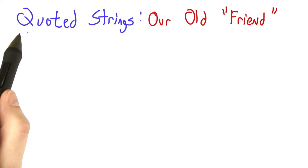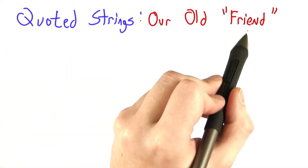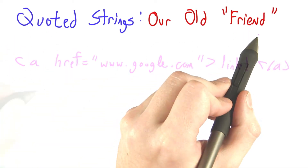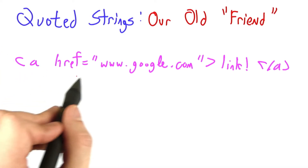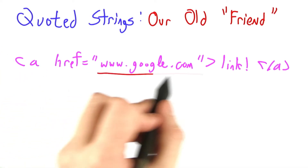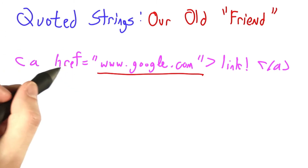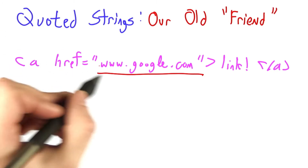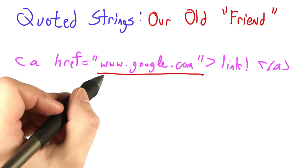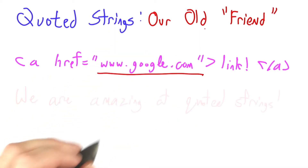When reasoning about HTML, it's critical that we understand quoted strings. They come up in almost every anchor tag, and anchor tags are the essence of hypertext. They're the interlinks between documents, so we really need those. They rely on quoted strings, which means we're going to need to understand quoted strings.